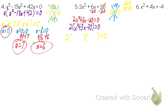So what's my first parenthesis going to look like? X minus 2. And my other parenthesis? X plus 5. So the factored form is 2(x minus 2)(x plus 5) equals zero.